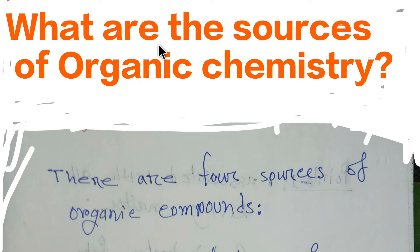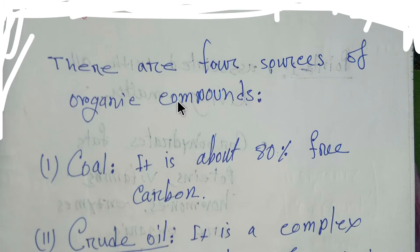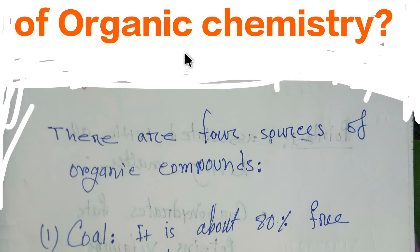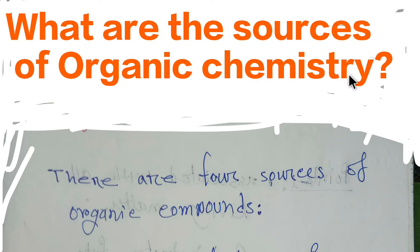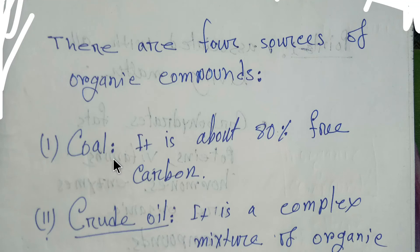Now we're going to learn the sources of organic chemistry — more specifically, the sources of organic compounds. There are four main sources of organic compounds. The first source is coal.